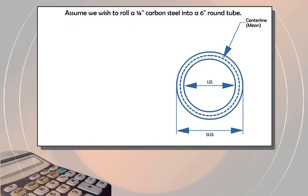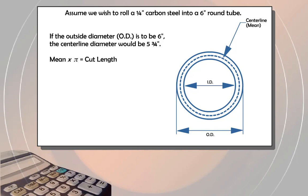Let's assume we wish to roll a ¼-inch carbon steel into a 6-inch round tube. If the outside diameter, or OD, is to be 6 inches, the centerline diameter would be 5¾ inches. If we use the formula mean times pi equals cut length, then 5.75 times 3.1416 equals 18.06.